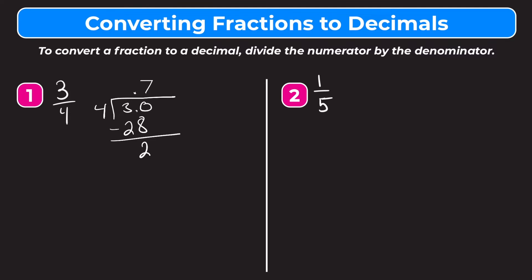Since we didn't end with a zero we add one more zero and bring it down. Now we have twenty. How many whole groups of four go into twenty? That's going to be five. Five times four is twenty. Subtract — twenty minus twenty is zero. Since we have a clean zero that means we are done. So three-fourths written as a decimal is seventy-five hundredths, or 0.75.